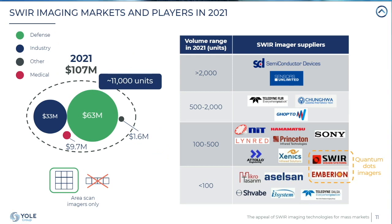Looking at the current market, we consider only area scan imager chips. In 2021, the main market is defense by value. The world market is approximately 11,000 pieces of area-scan imagers, so SWIR is a niche — high value but low volume. The secondary market by value is industry. There are two strong leaders: SCD and Sensors Unlimited, more focused on defense, each shipping a little more than 2,000 imager pieces per year. The ecosystem is highly fragmented with many secondary players.